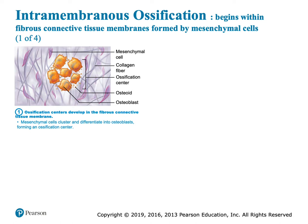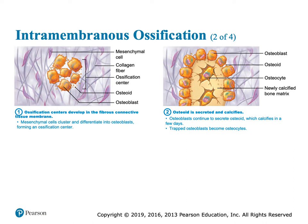Intramembranous ossification is when we take that mesenchymal tissue and make it straight into bone. That mesenchyme is going to differentiate into clusters of osteoblasts — we go straight to bone. We don't need a hyaline cartilage model. Mesenchyme differentiates into osteoblasts, and osteoblasts secrete osteoid. When those osteoblasts secrete osteoid, it attracts calcium and that area is going to get hard.